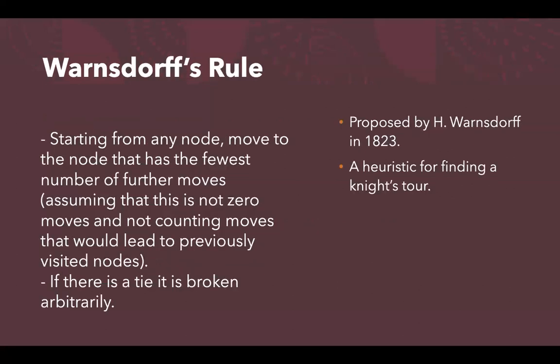One can ask how one would solve this. In 1823, a rule was proposed by H. Warnsdorf. Warnsdorf's rule is a heuristic for finding a knight's tour — a set of rules one could follow that would result in the answer. Warnsdorf's rule states that starting from any node, you move to the node that has the fewest number of further moves, assuming that node does not have zero moves left and not counting moves that would lead to previously visited nodes. If there is a tie, two nodes with the same number of further moves, that tie is broken arbitrarily.